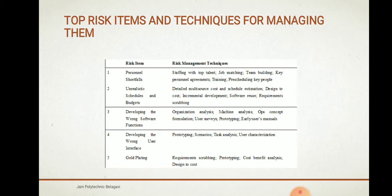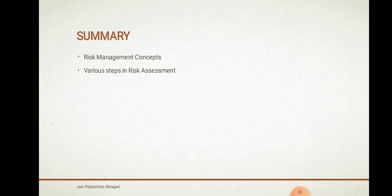Looking at the top risk items and techniques for managing them: the first is personnel shortfalls. Management techniques for this include staffing with top talent, job matching, team building, key personnel agreements, and rescheduling key people. Another risk is gold plating, for which the management techniques include requirement scrubbing, prototyping, cost-benefit analysis, and design to cost. In this video, we discussed risk management concepts and the steps in risk assessment. Thank you.